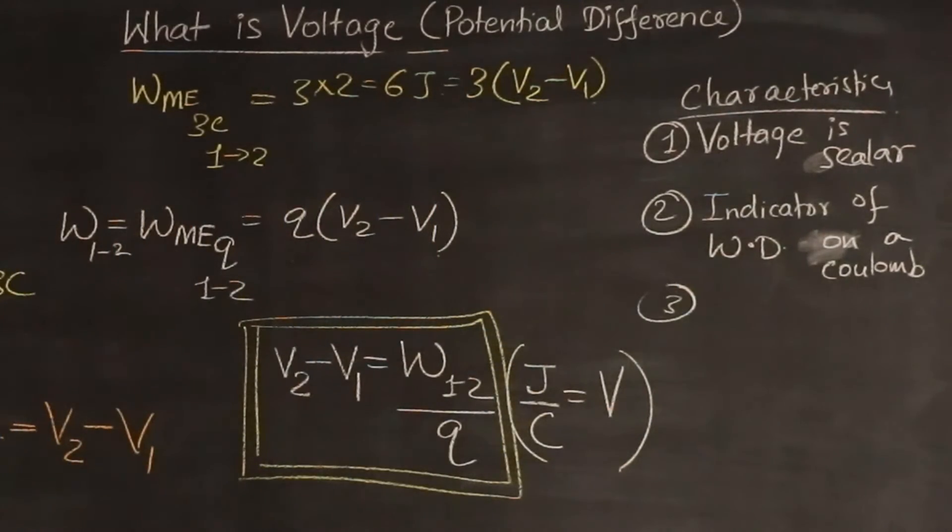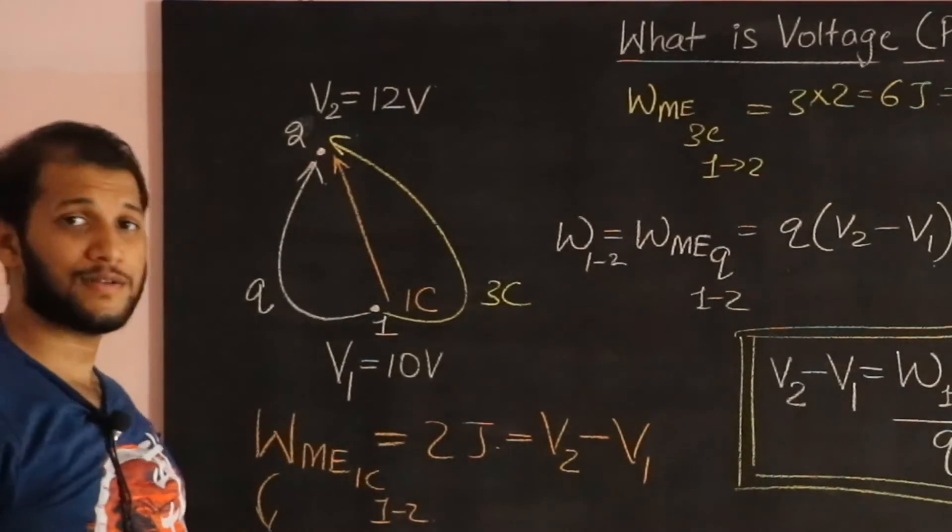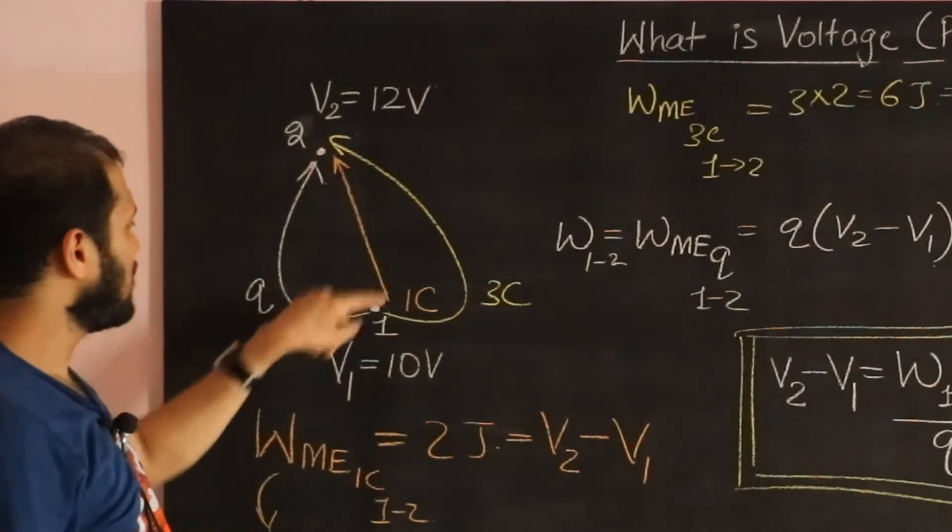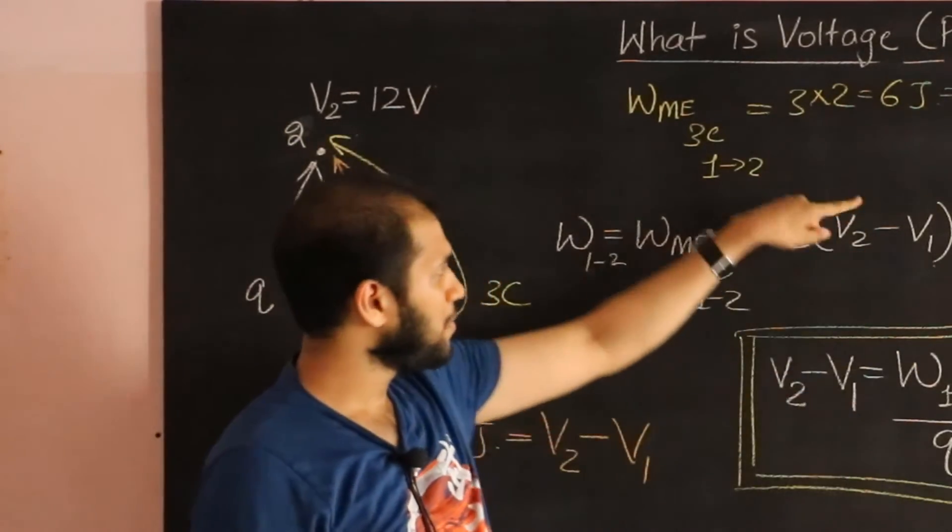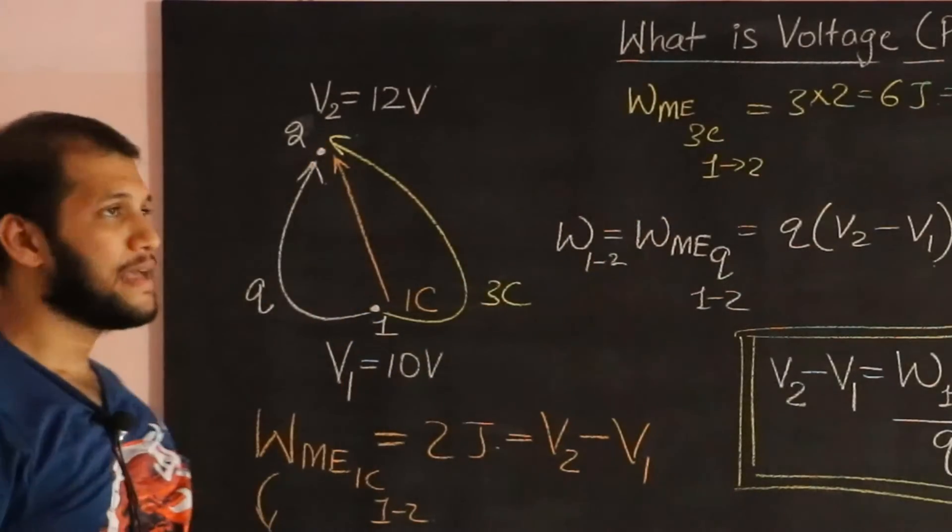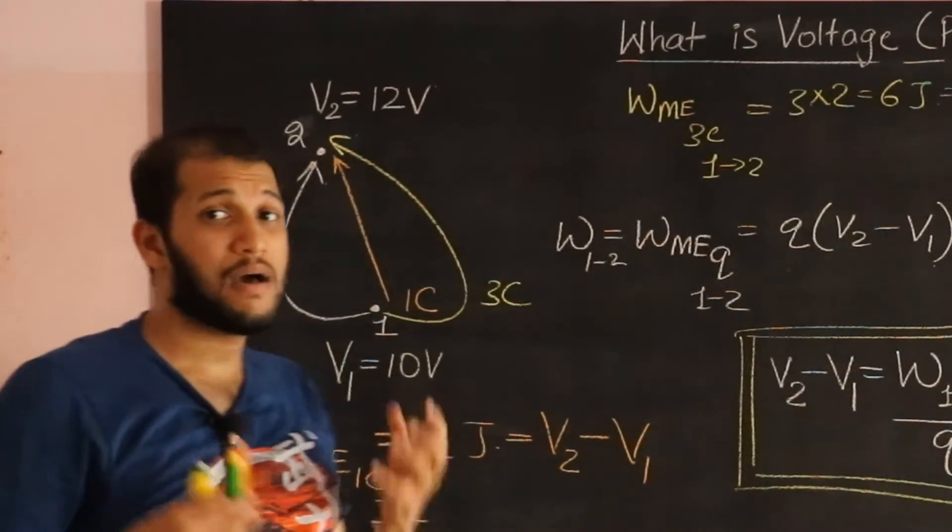We did not specify the path that we took to go from one point to another. We could have gone straight. We could have gone in this curved path. I could have gone like this and go all the way till here and then come back over here.